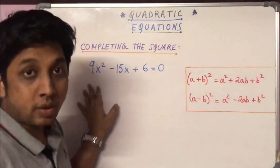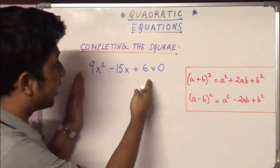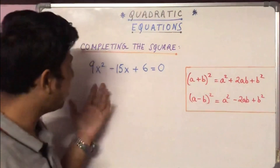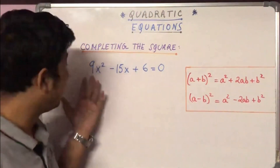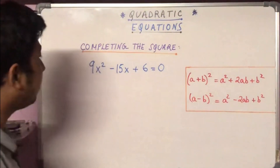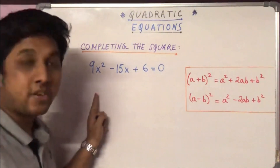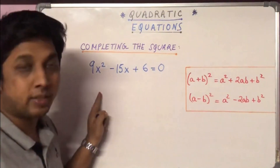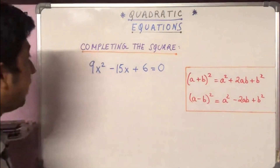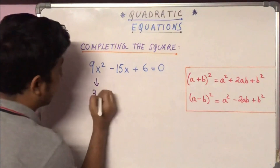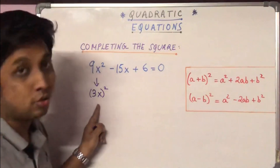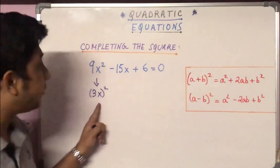To solve by completing the square method, you have to convert this quadratic expression into a perfect square. For that, we first look at the first term, 9x². We check whether it can be expressed as a perfect square of some expression — and yes, 9x² can be expressed as (3x)².